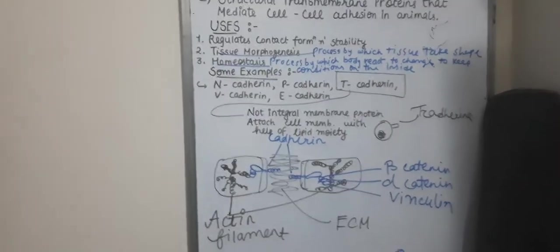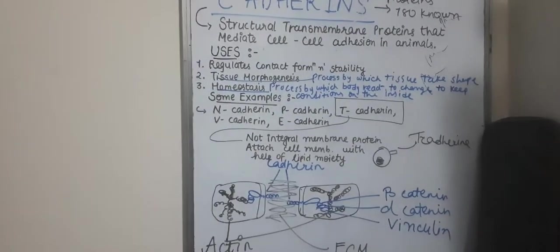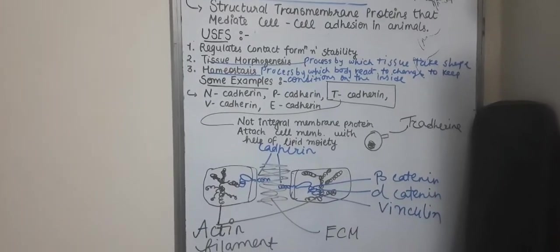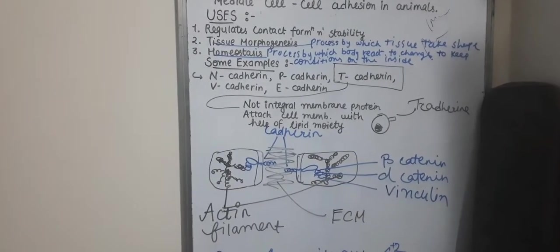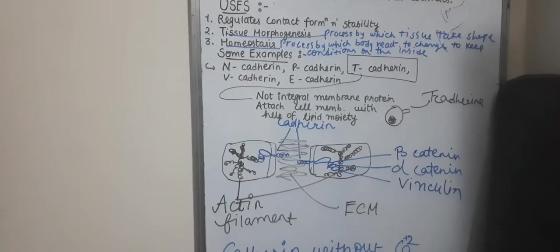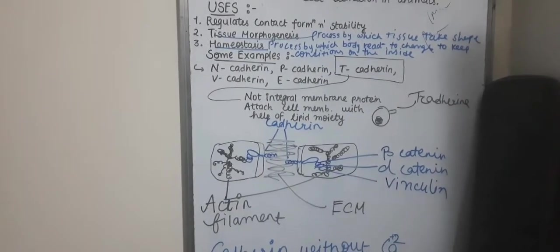Now some examples of cadherins we'll discuss: N-cadherin, P-cadherin, V-cadherin, T-cadherin, E-cadherin are some of the examples. Now we'll discuss the T-cadherin a little bit.